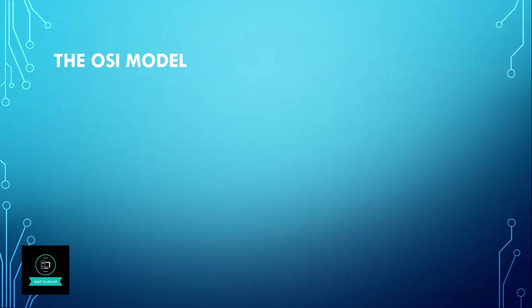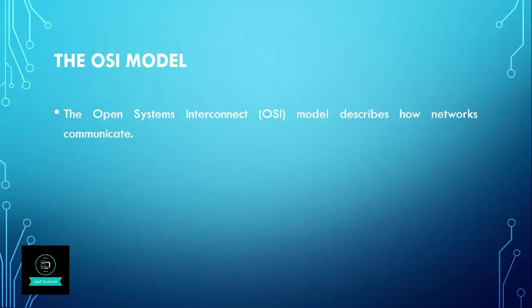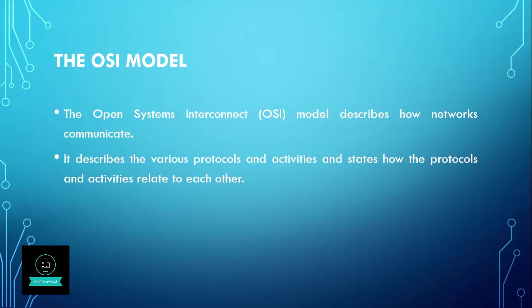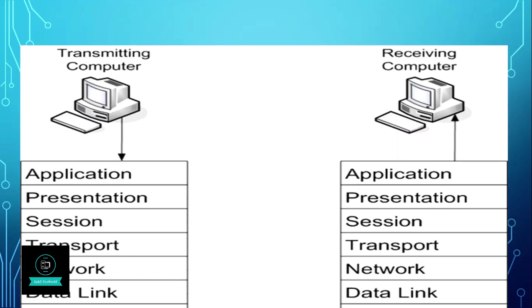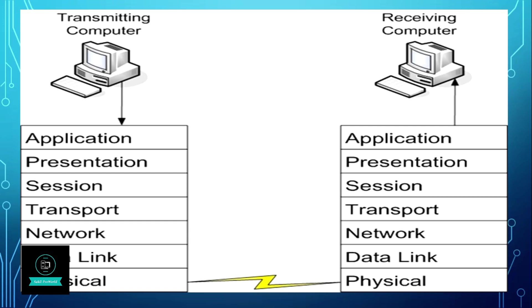Our next topic is the OSI model. OSI stands for Open System Interconnect. This model describes how networks communicate. It describes the various protocols and activities and states how the protocols and activities relate to each other. This model is divided into seven layers. It was originally developed by the International Organization for Standardization in the 1980s. As you can see, there are seven layers of the OSI model.